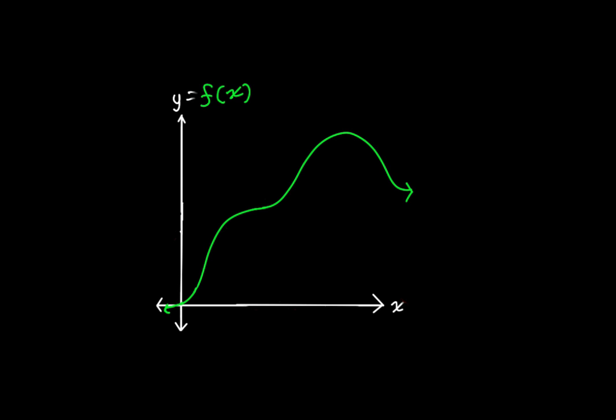Over the last couple of videos we've been cementing the concept that at every point on some function there is a slope — a relationship between the variables of that function — represented by a tangent line intersecting at whatever point we're looking at. But the tangent line, just like the slope at every point, hasn't really been clearly defined yet, because we haven't found a way to find the ratio of increase of one variable to the other at a single point.